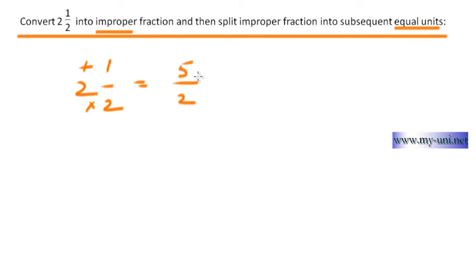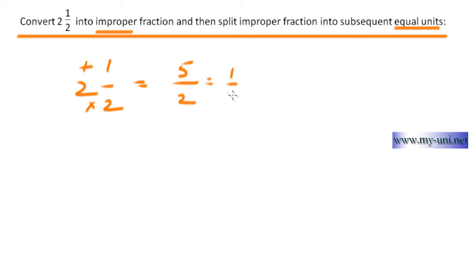The mixed numeral has been converted into an improper fraction because the numerator is bigger than the denominator. The next part of the question is to split the improper fraction into subsequent equal units. So five halves essentially means half five times.